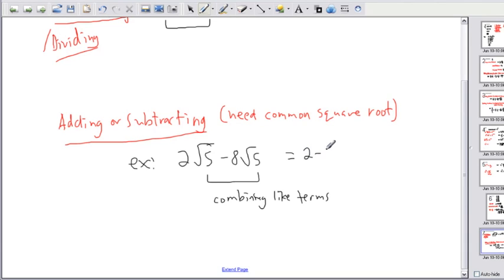So I'm going to combine 2 square root of 5 minus 8 square root of 5. That's going to be the same thing as 2 minus 8 all times the square root of 5. That's the same thing. I'm in fact factoring right now. I'm taking out the square root of 5 from both of them.